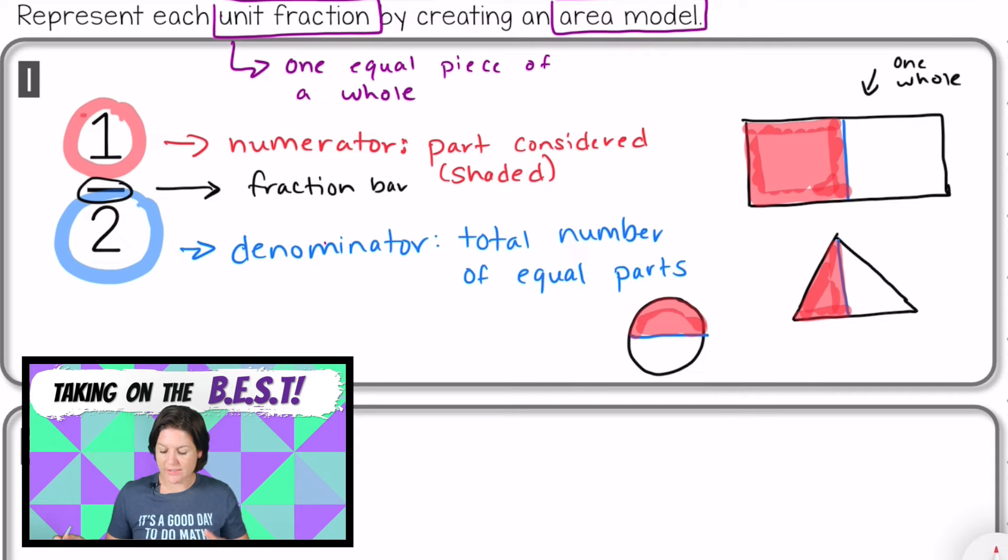So an area model does not just need to be a rectangle, but when I am modeling fractions, it's easier to cut it into equal parts if it is a rectangle. So moving forward, we're going to use a rectangle, but just know you might see it represented in a variety of other shapes too. Go ahead and make sure that you have all of these notes copied, and then join me for number two.